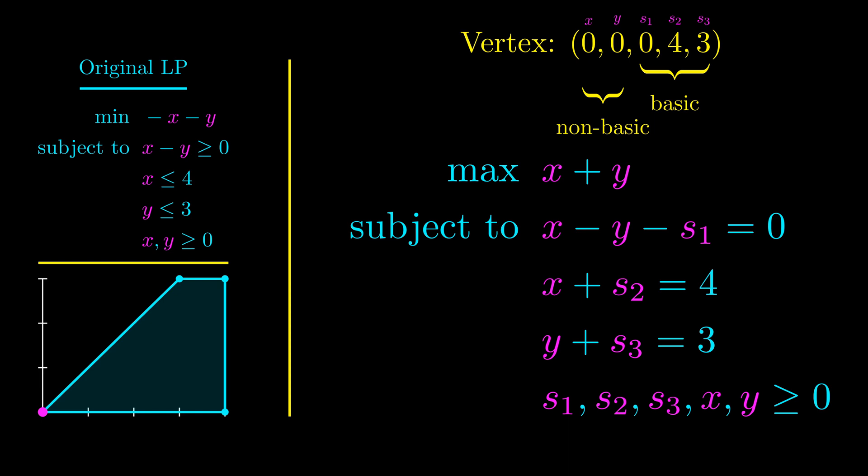This initial vertex corresponds to the purple dot on the feasible region of the original linear program. Now, to perform simplex, we need to transform the linear program into something called the simplex tableau. There are a few steps.